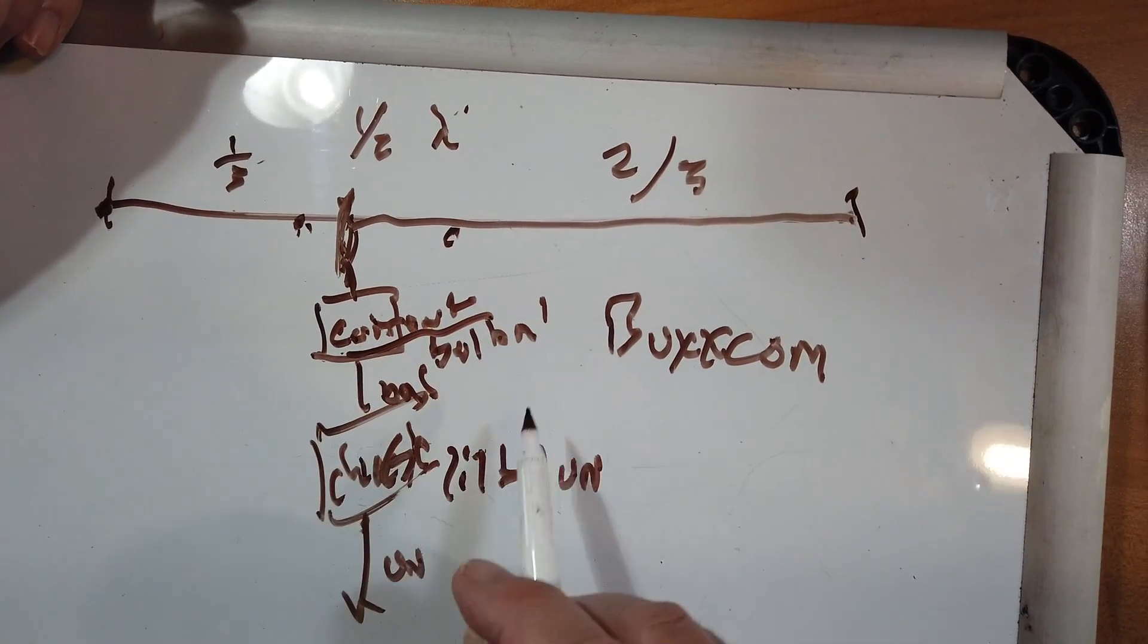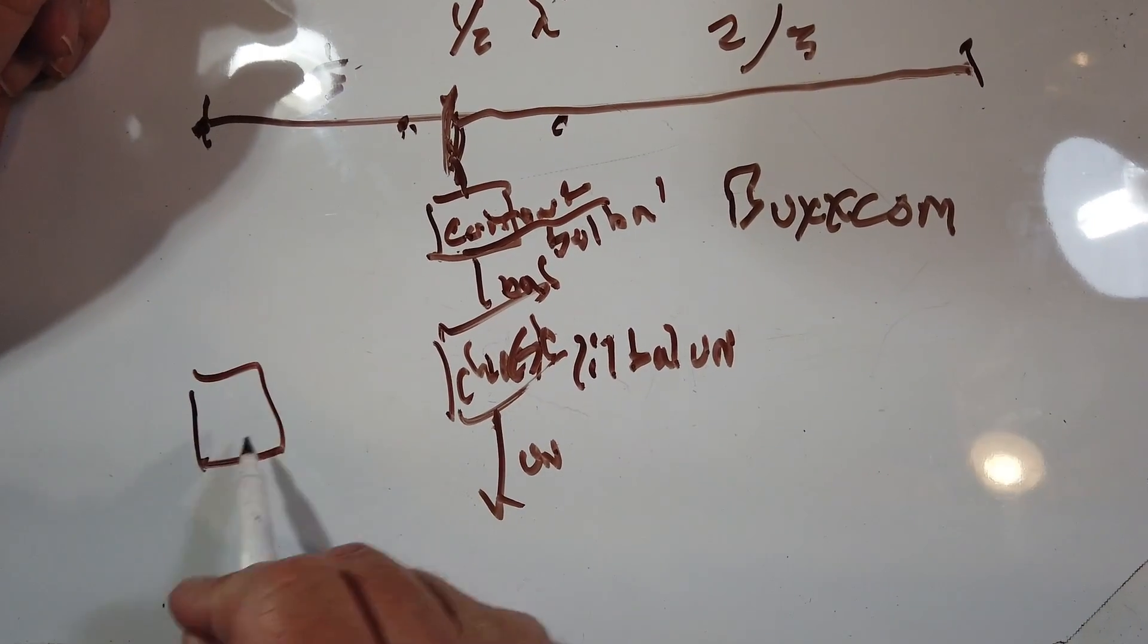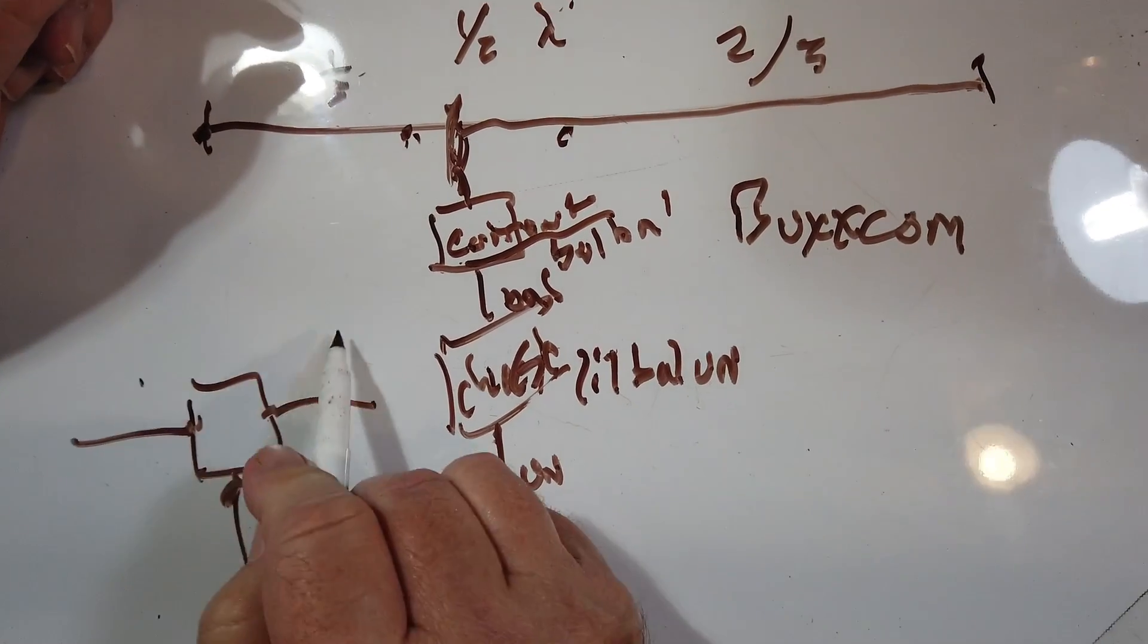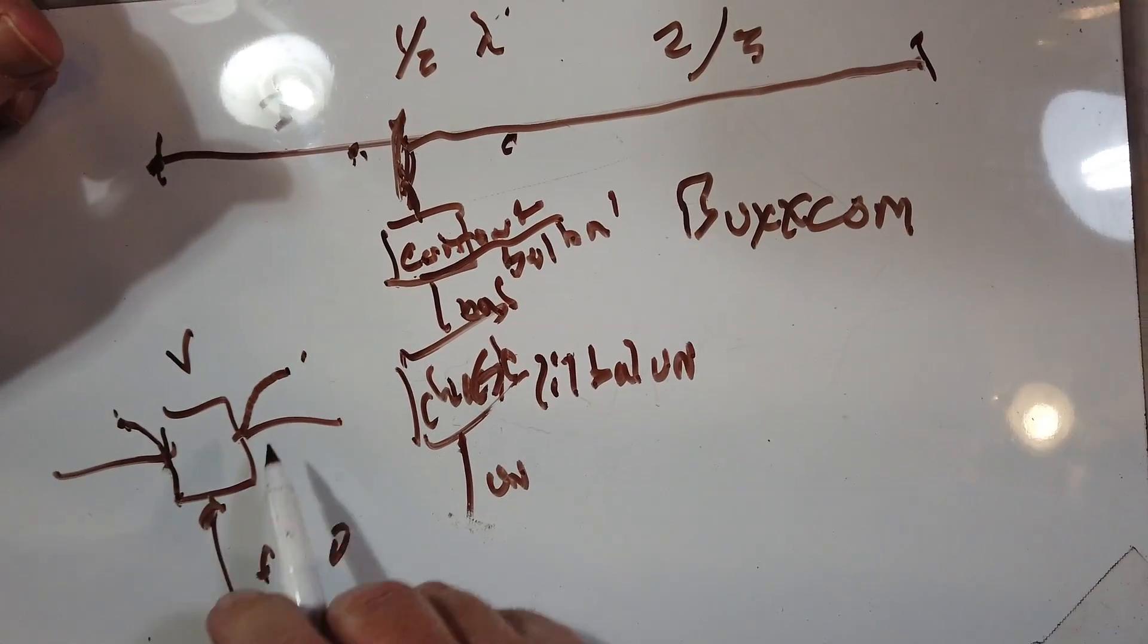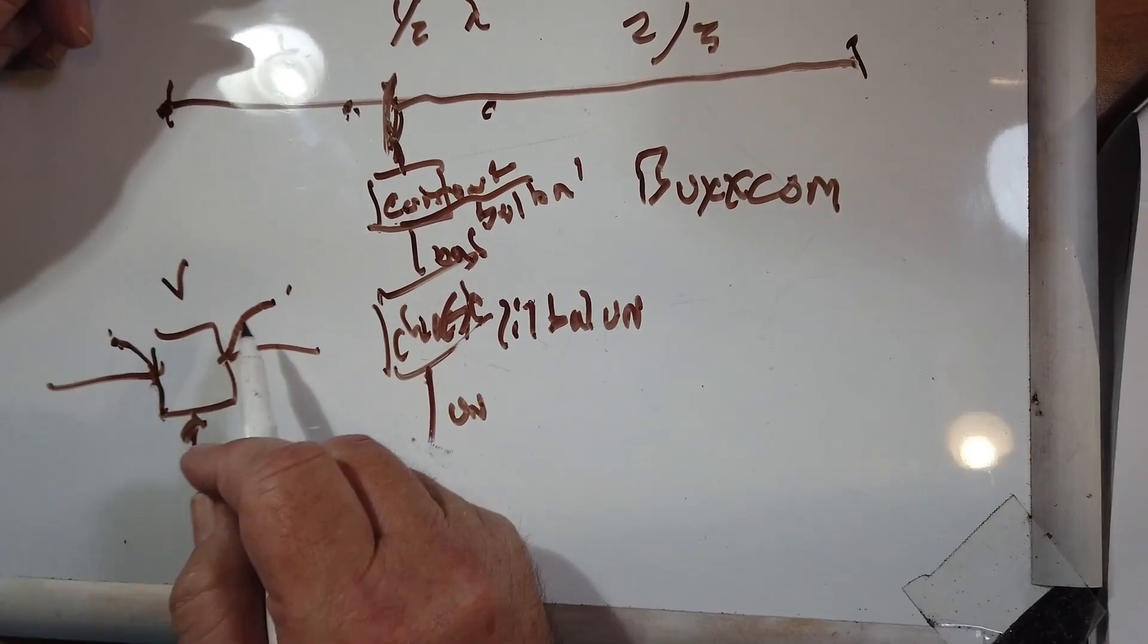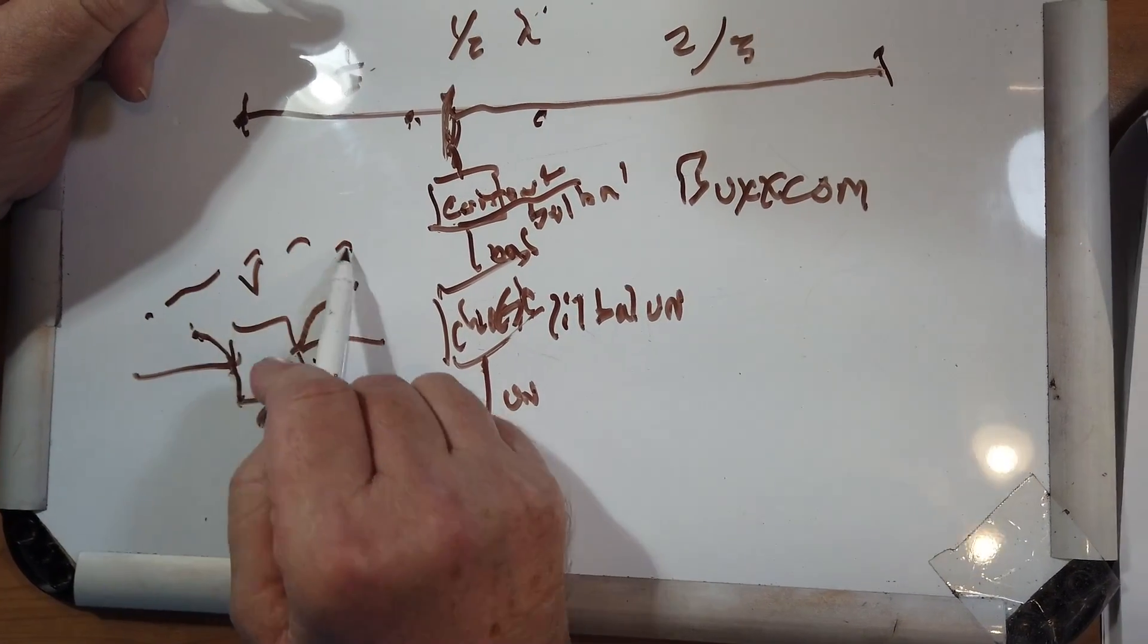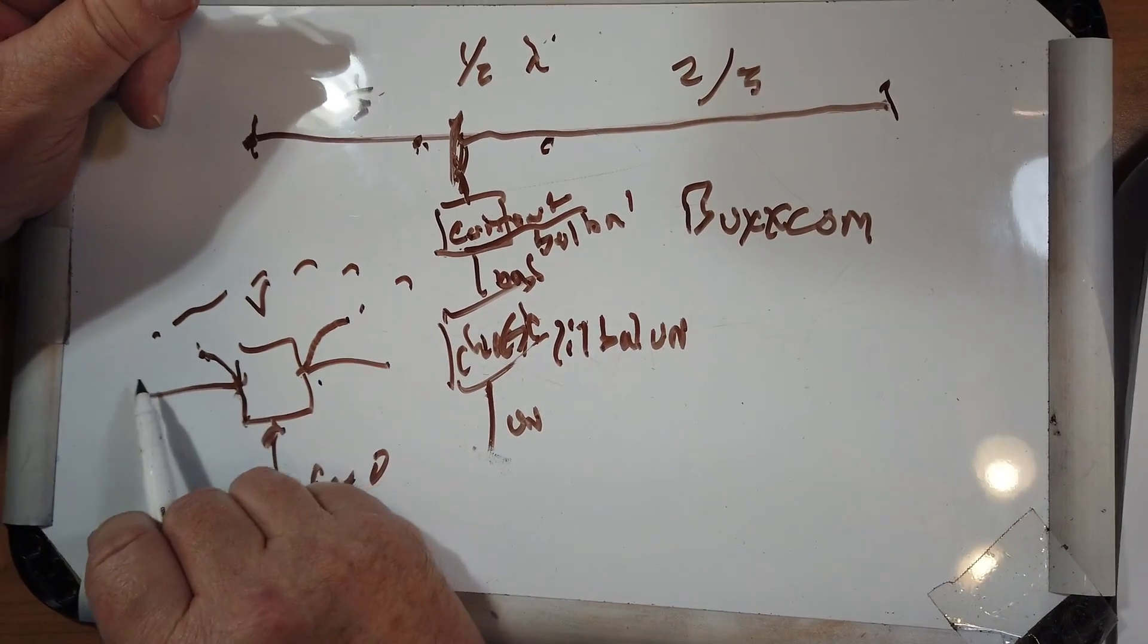And this is a current balun. Now, the difference between a voltage balun and a current balun is this. Let's say this is the feed line. And these are the two halves of the dipole. This is designed so that the voltage on each side is the same. And it will go up and down with the antenna.